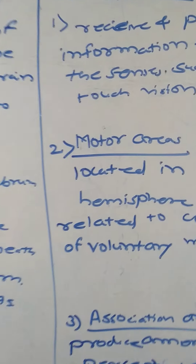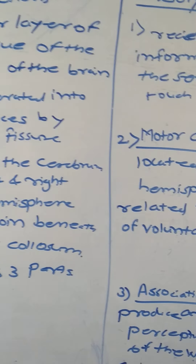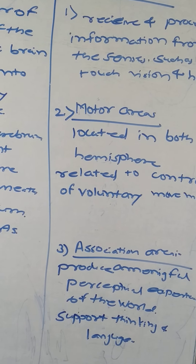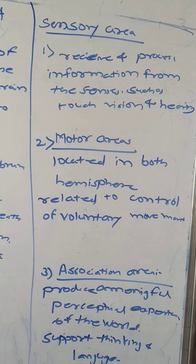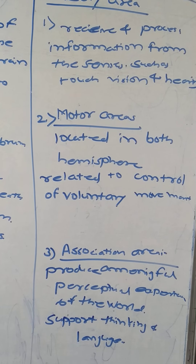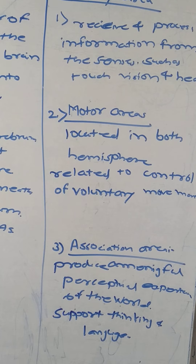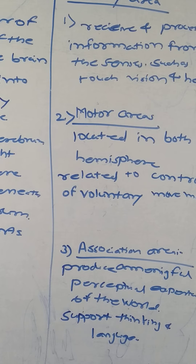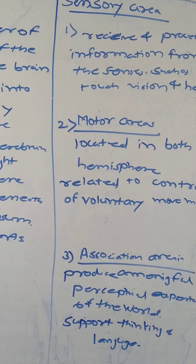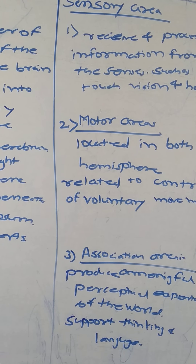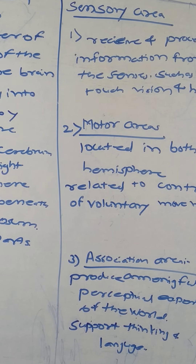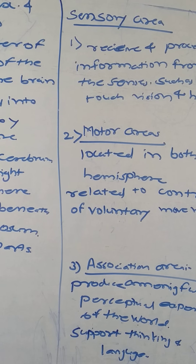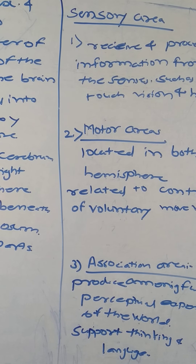In more general terms, the cortex is typically described as comprising three parts: sensory, motor, and association areas. Sensory areas are the cortical areas that receive and process information from the senses. Parts of the cortex that receive sensory inputs from the thalamus are called primary sensory areas. The senses of vision, hearing, and touch are served by the primary visual cortex, primary auditory cortex, and primary somatosensory cortex respectively.